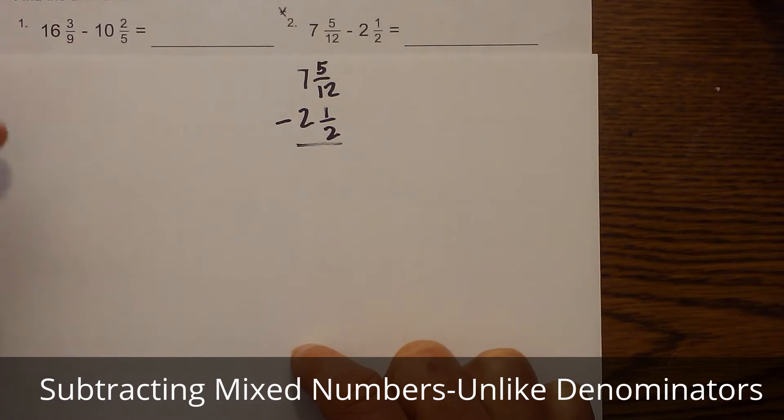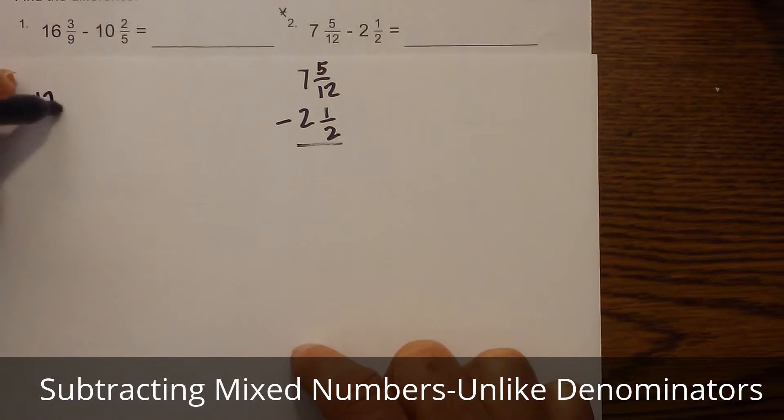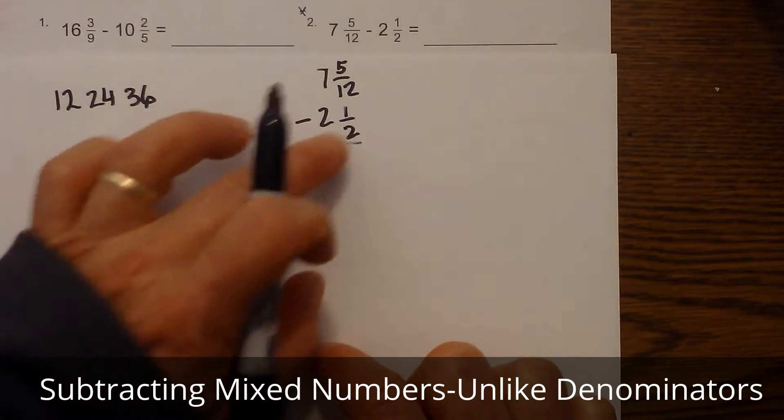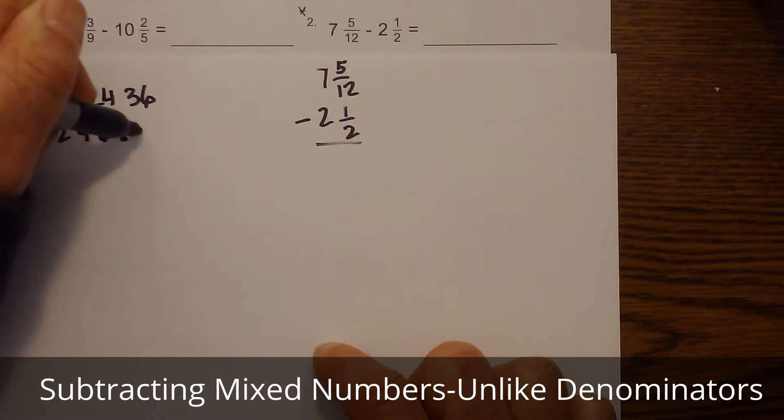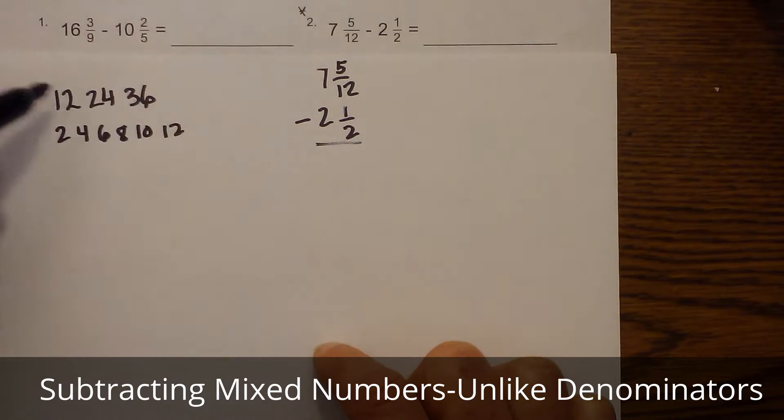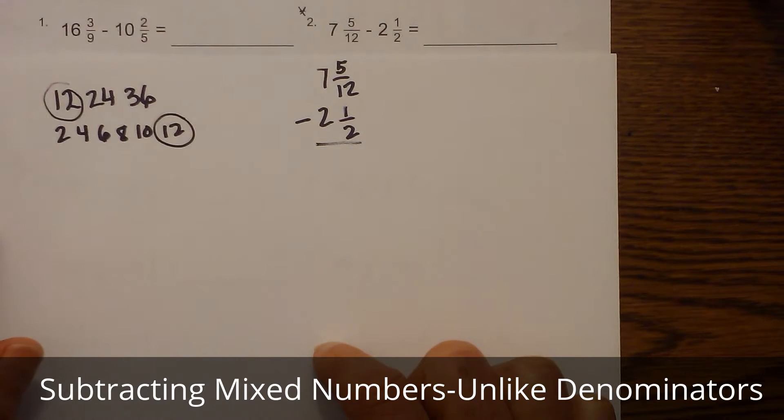What I like to do is I like to take my largest number and write its multiples out: 12, 24, 36. And then I write out multiples for the smaller number until I match the smallest number here. So I'll go 2, 4, 6, 8, 10, 12. And see, they match 12 and 12. So I know that's the common denominator.